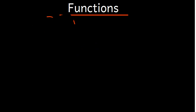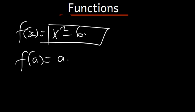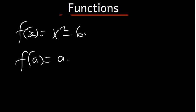Sometimes they can ask: given the function f of x equal to x squared minus 6, and given that f of a is equal to a, find the possible values of a. What this means is that wherever there is x in the function, we replace it with a, then equate it to a. So f of a is going to be equal to a squared minus 6.